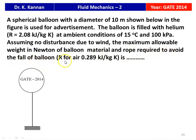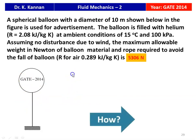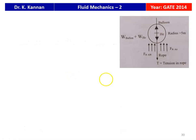Take R gas constant for air as 0.289 kJ per kilogram Kelvin. We have to find the weight of the balloon material and the rope in Newton. The answer is 5306 Newton. We will see how in the next slide.